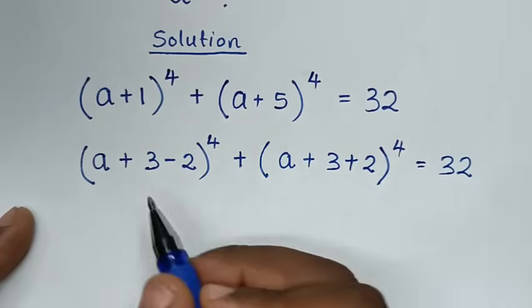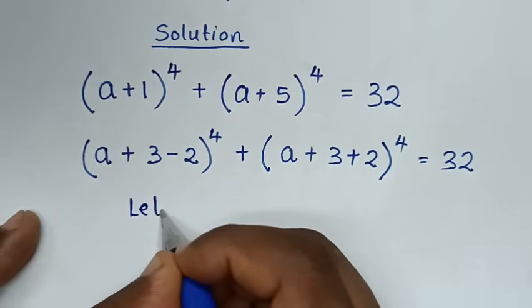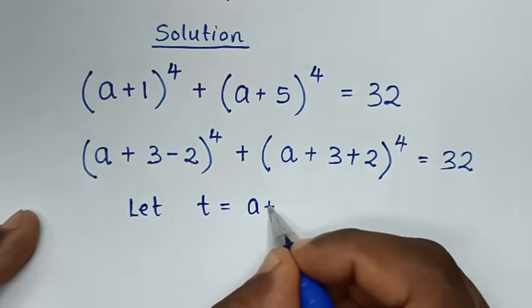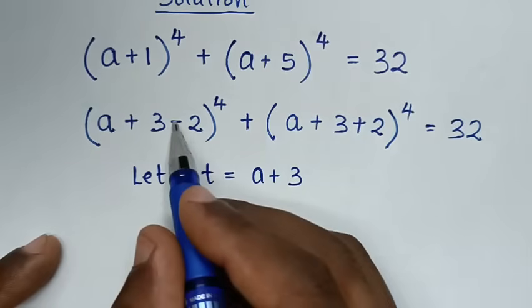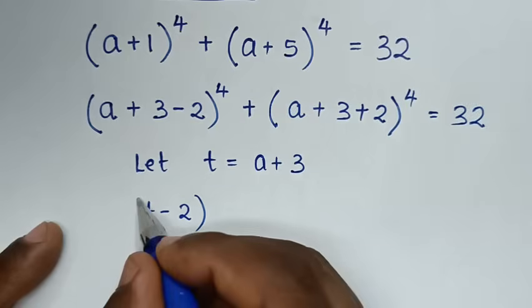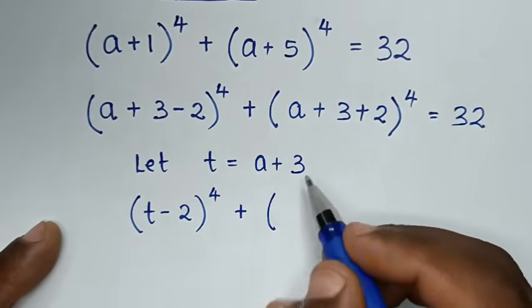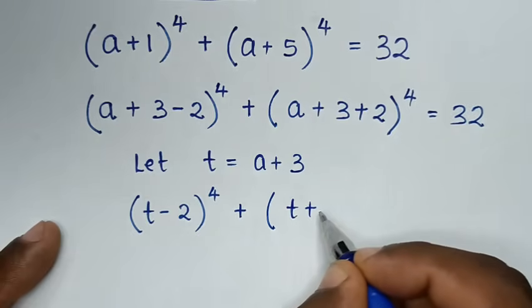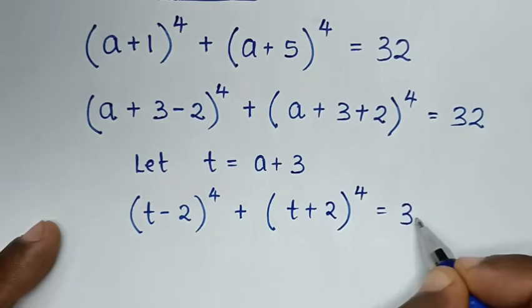We notice that (a + 3) is common in both terms. So we let t = a + 3. The equation then becomes (t − 2)⁴ + (t + 2)⁴ = 32.